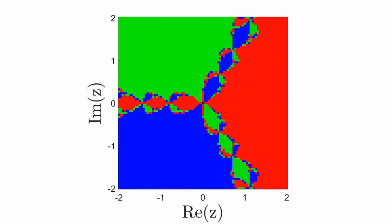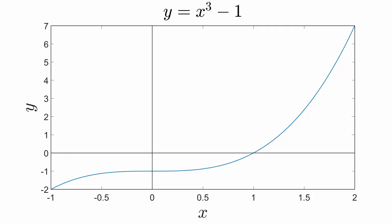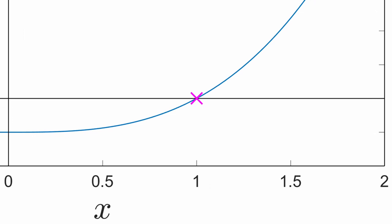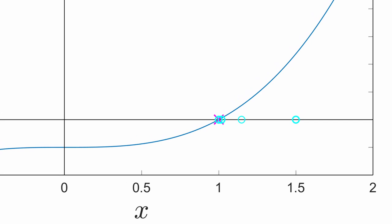The function f(z) = z³ − 1 is a complex function, and it's hard to see what's exactly going on during a Newton's iteration. So let's first have a look at the real function f(x) = x³ − 1. Here is a graph of that cubic polynomial. The single real root is located at x = 1. Let's follow a Newton's iteration with x₀ = 1.5. Here is the first iteration, and here is the second iteration. After a couple more iterations, Newton's method converges to the root.